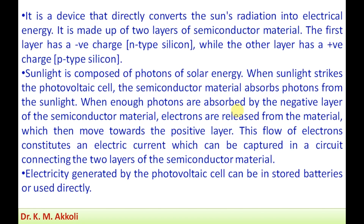The solar cell or photovoltaic cell is a device that directly converts the sun's radiation into electrical energy. It is made up of two layers of semiconductor material. The first layer has a negative charge — that is N-type silicon — while the other layer has a positive charge — P-type silicon. Sunlight is composed of photons of solar energy.